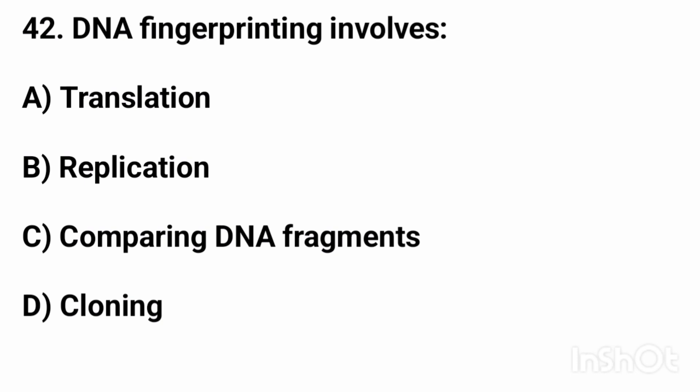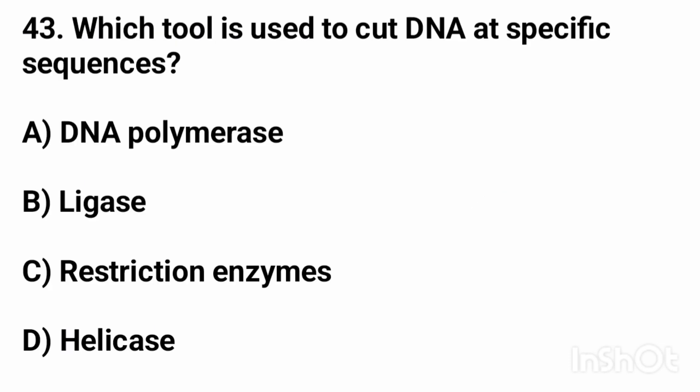Question forty-two: DNA fingerprinting involves? The right answer is option C, comparing DNA fragments. Question forty-three: which tool is used to cut DNA at specific sequences? The right answer is option C, restriction enzymes.